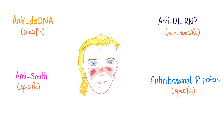For systemic lupus, we have anti-double-stranded DNA, anti-Smith, anti-U1-RNP, and anti-ribosomal P-protein. These are specific, specific, non-specific, and specific respectively. Anti-double-stranded DNA correlates with lupus nephritis and vasculitis. Anti-ribosomal P-protein correlates with liver disease as well as CNS problems.